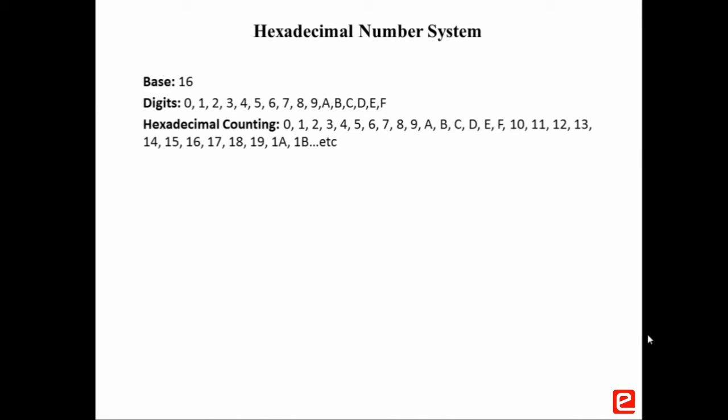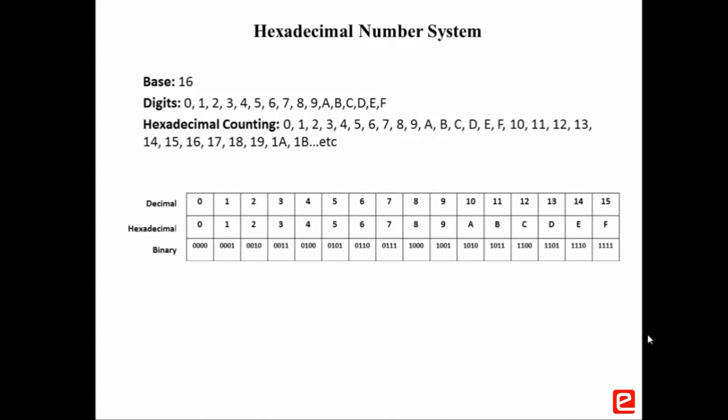Next is the hexadecimal number system, where the base is 16. Hexadecimal is used for representing digital circuit numbers in a form that is more compact than binary. It has 16 possible different numbers, represented using digits 0 to 9 and letters A to F. Hexadecimal counting starts from 0 to F, then 10 to 1F, and so on. The given table shows the mapping of decimal, hexadecimal, and binary number systems. Using 4 bits, 16 different combinations of hexadecimal can be shown.